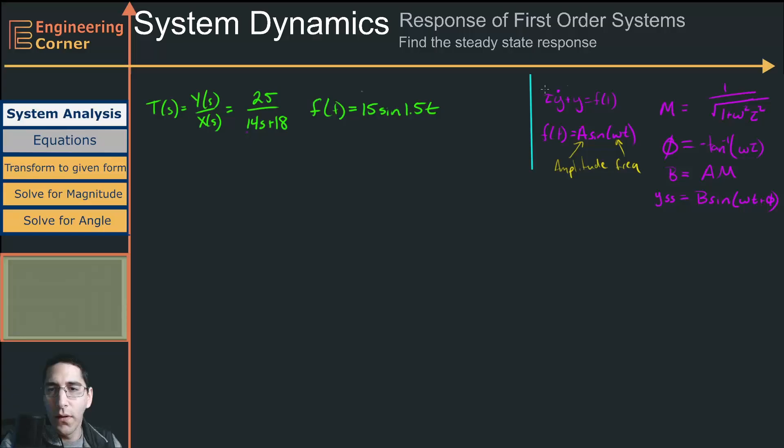And on this side, if we can get our transfer function to be in the form of 1 over tau s plus 1, where tau right here is going to be our time constant...